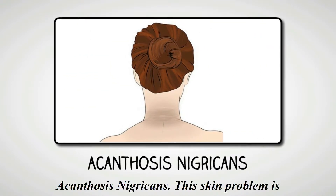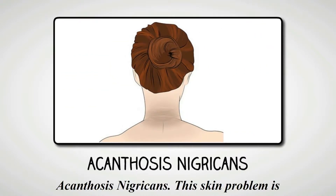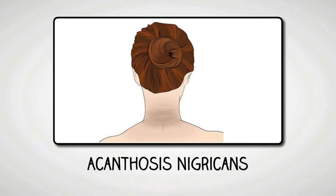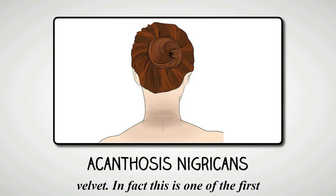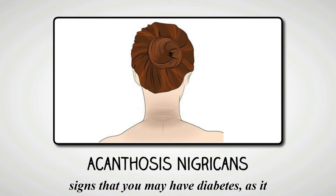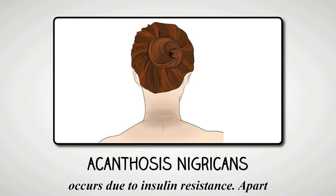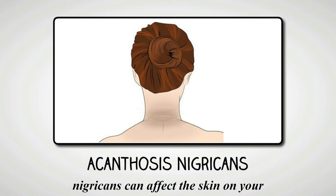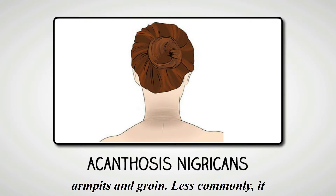Acanthosis nigricans. This skin problem is characterized by darker skin in the creases of the neck that feels like velvet. In fact, this is one of the first signs that you may have diabetes, as it occurs due to insulin resistance. Apart from the back of your neck, acanthosis nigricans can affect the skin on your armpits and groin.